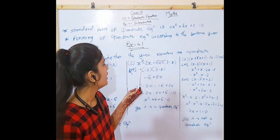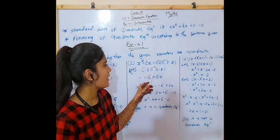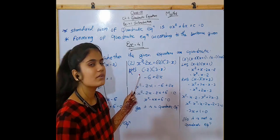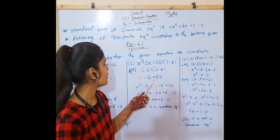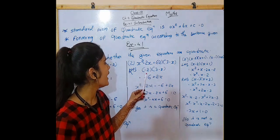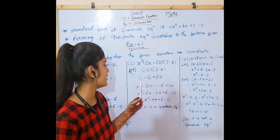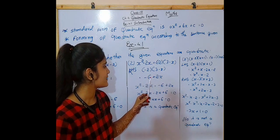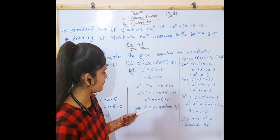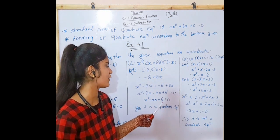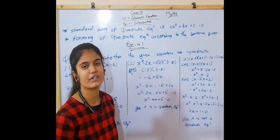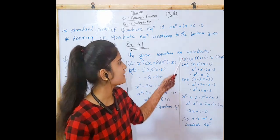Number 2: X² - 2X = -2(3 - X). We equate the right-hand side: -2(3 - X) = -6 + 2X. By equating both sides together, we get X² - 4X + 6 = 0, and it is also in the form of a quadratic equation.